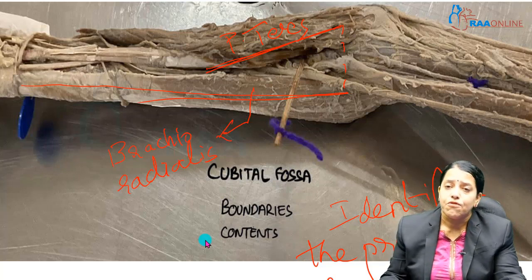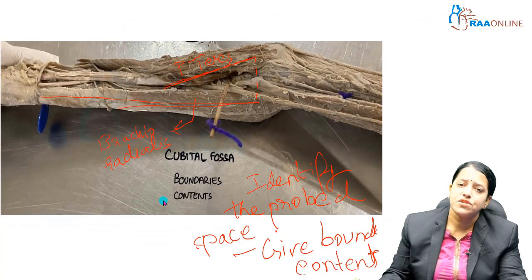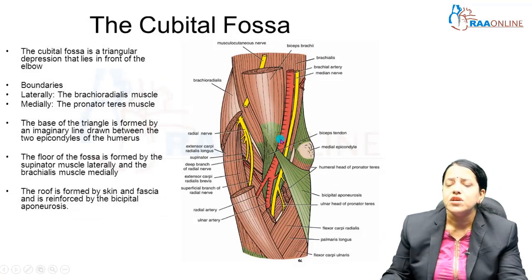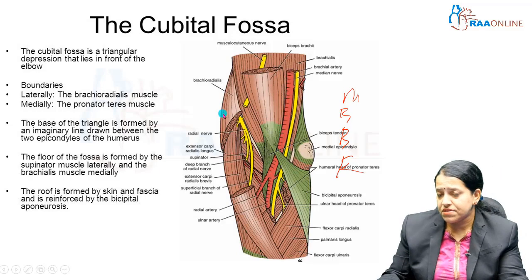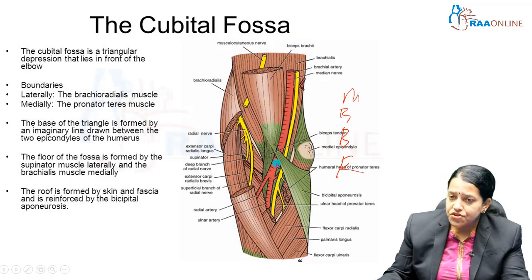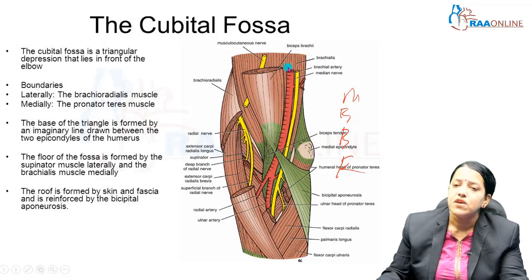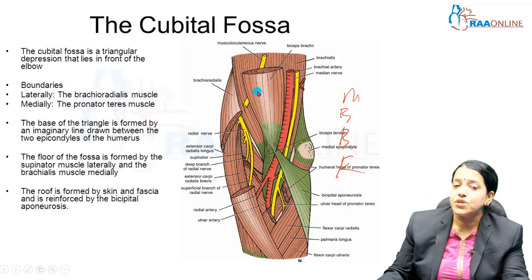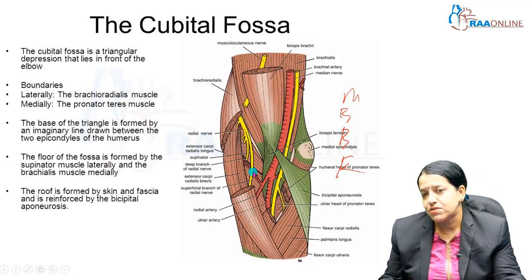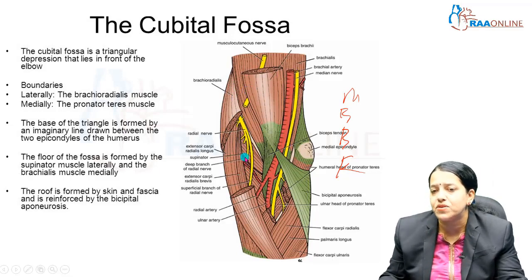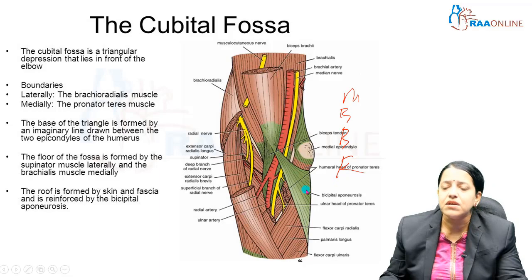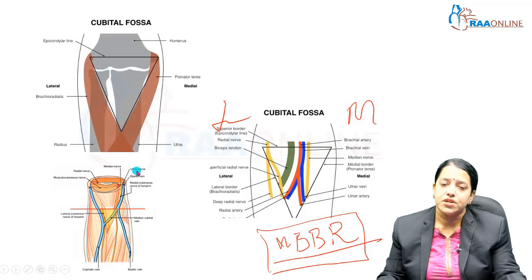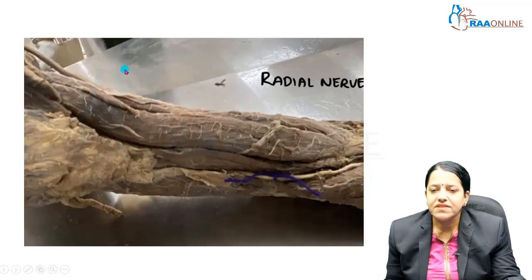Coming to the contents of the cubital fossa — the mnemonic is MBBR. From medial to lateral: the Median nerve, the Brachial artery, the Biceps tendon (two B's — Brachial artery and Biceps tendon), and the Radial nerve at a deeper plane. The radial nerve supplies the posterior compartment of the arm; it enters the anterior compartment here, where it divides into a deep branch and a superficial branch. These are the contents of the cubital fossa.